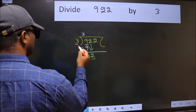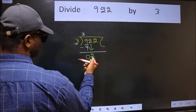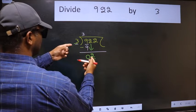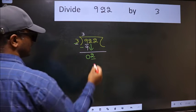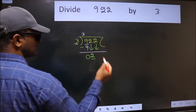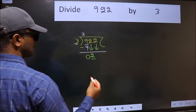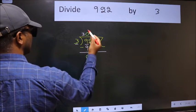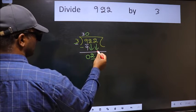Now here we have 2 and here 3. 2 is smaller than 3. So we should bring down the second number. And the rule to bring down the second number is we should put 0 here. Then only we can bring down this number.